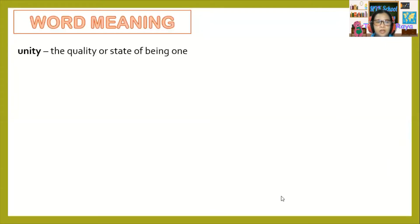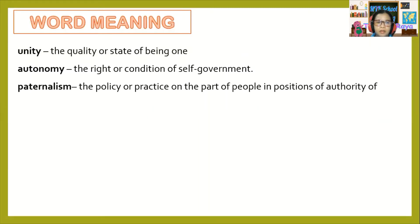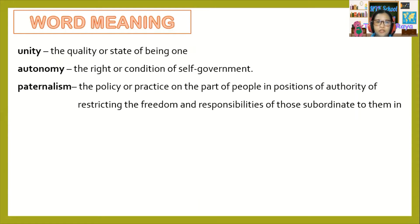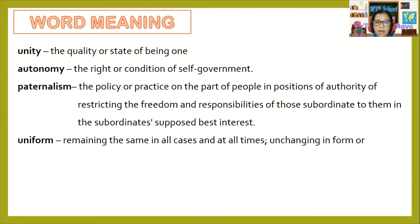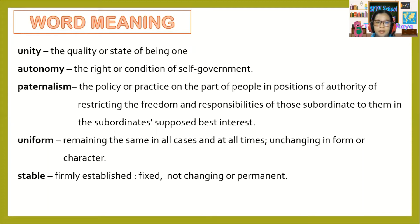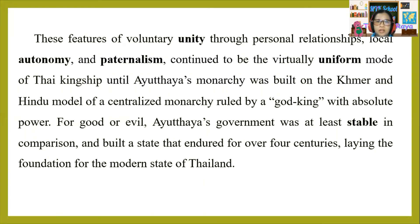Another word meaning — Unity: the quality or state of being one. Autonomy: the right or condition of self-government. Paternalism: the policy or practice on the part of people in positions of authority of restricting the freedom and responsibilities of those subordinate to them in the subordinate's best interest. Uniform: remaining the same in all cases and at all times, unchanging in form or character. Stable: firmly established, fixed, not changing, or permanent. These features of voluntary unity through personal relationships, local autonomy, and paternalism continued to be the virtually uniform mode of Thai kingship until Ayutthaya.